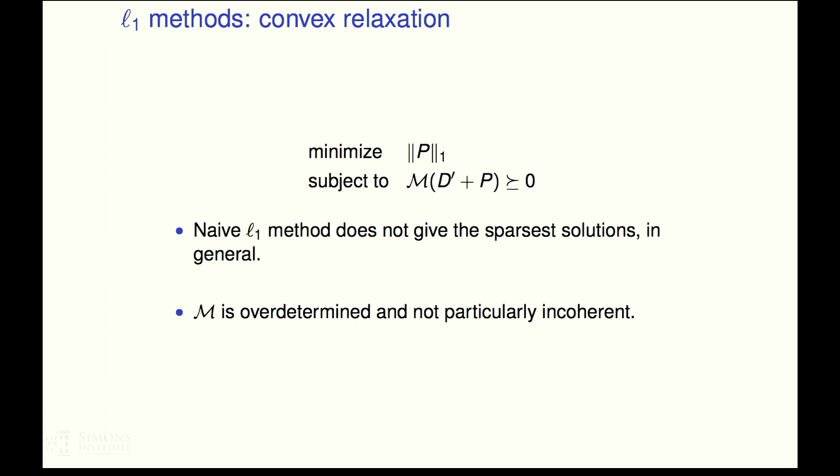And then if you're really thinking combinatorially, you'll notice this matrix M, it's tall and thin. It's not short and fat, so your standard like compressed sensing machinery doesn't work. So M is over-determined. Furthermore, if you think about where all these plus minus ones are in M, it's very structured. It's definitely not random and it's fairly coherent. So this doesn't work very well.